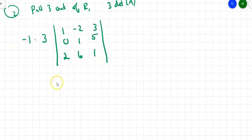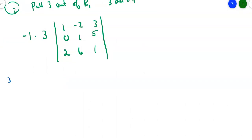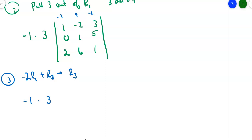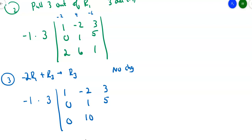Now I'd like to get rid of the 2 in the bottom left corner. I'll take -2 row 1 plus row 3, answer goes in row 3. Multiplying row 1 by -2 gives [-2, 4, -6]. Adding a multiple of one row to another doesn't change the determinant, so no change to the outside factor. Row 3 becomes [0, 10, -5]. The matrix is now [1, -2, 3; 0, 1, 5; 0, 10, -5] with -1 times 3 outside.